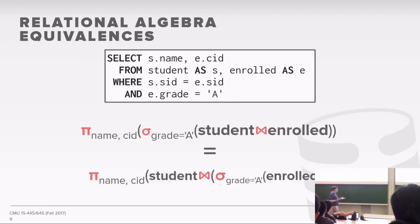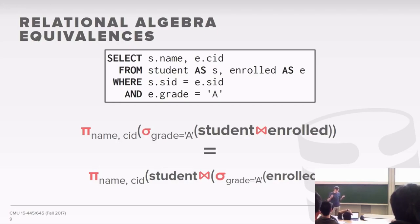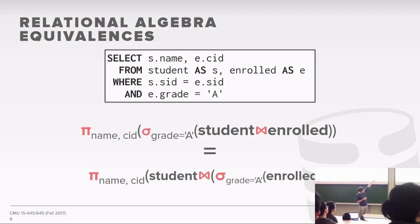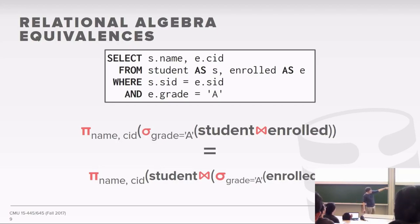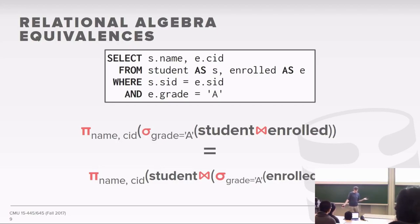We can always do this unless the filter requires data from the table you're joining on — for example, if grade equals student name plus something else, you need values from both tables and can't push down that predicate. The reason we can do this is because we rely on relational algebra: moving that filter around doesn't affect the output the database generates. The expression on top is the straight SQL-to-relational-algebra translation; the one on the bottom moves the filter directly onto the enrolled table before the join, and we know the output will be the same.